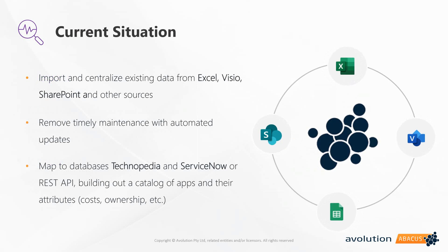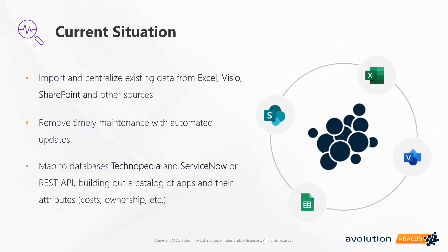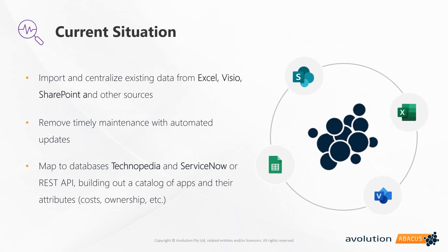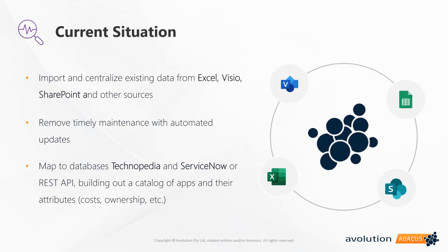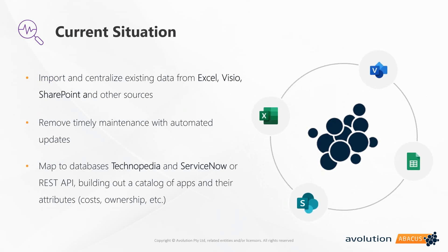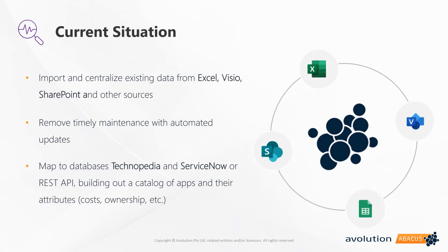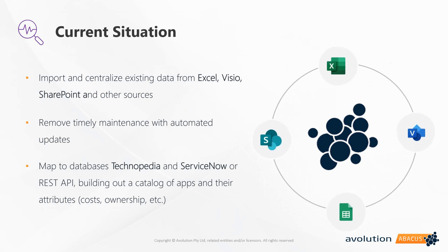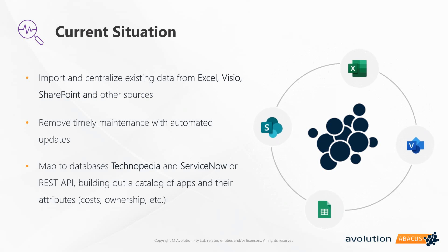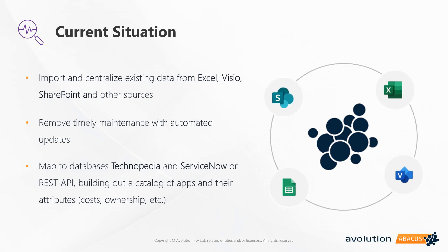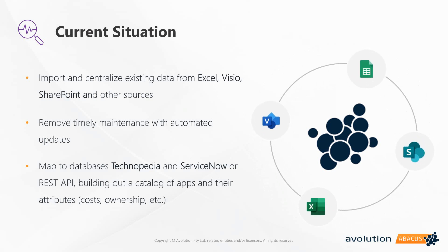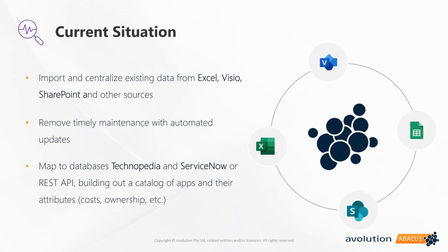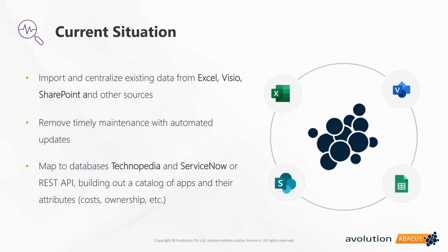This step of assessing the current situation does require data from many different sources, such as Excel, Visio, SharePoint, as well as sources such as Technopedia or ServiceNow, or additional services which might require an integration built, perhaps using something like a REST API. Abacus does allow for import from Excel, Visio, SharePoint, Technopedia, and ServiceNow, and also provides a REST API for easy integrations with other tools.